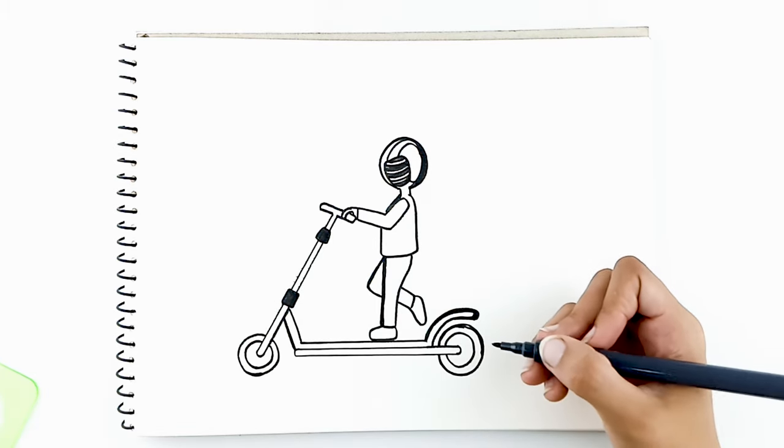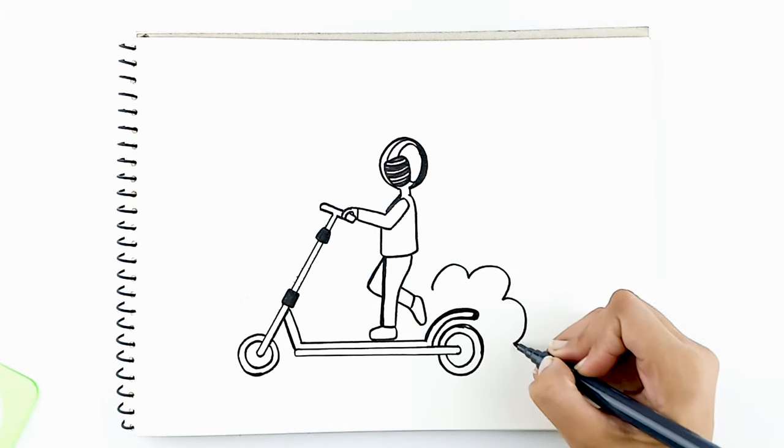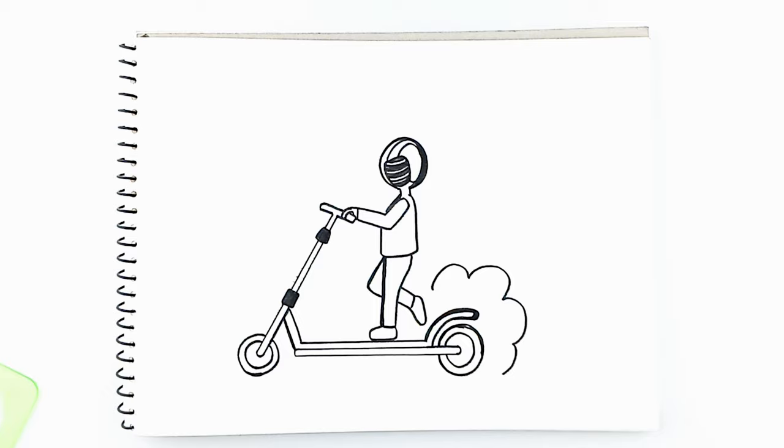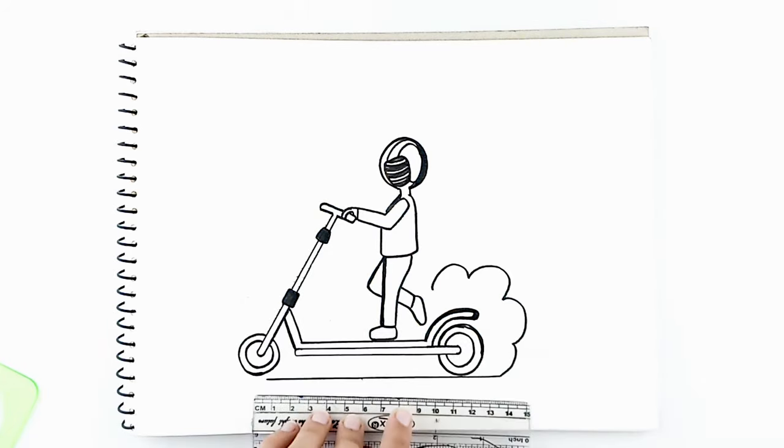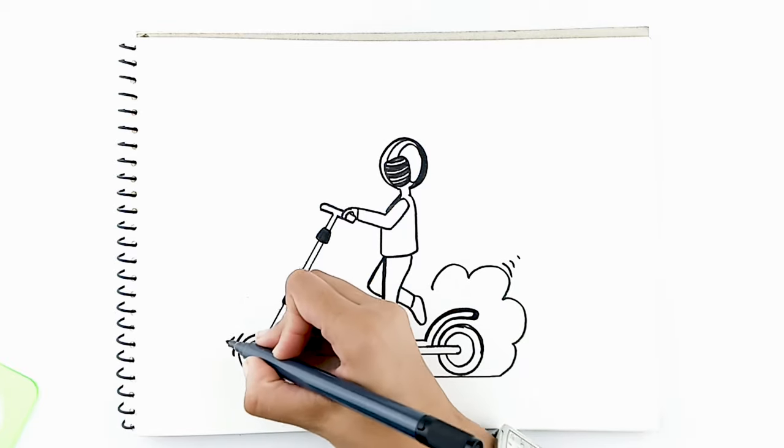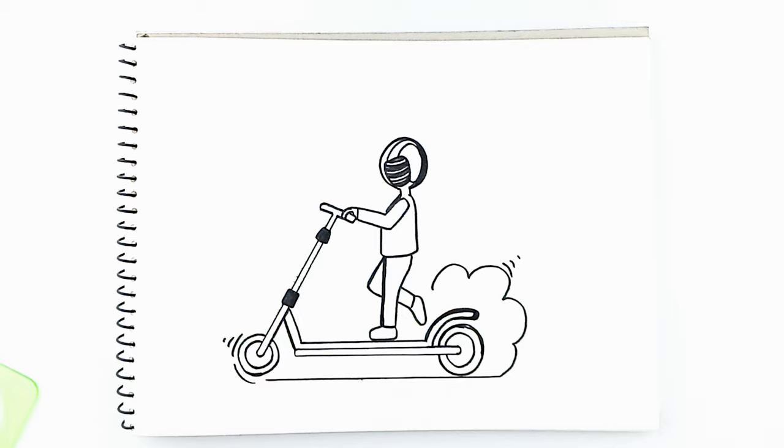Great! Let's now draw a cloud-looking line behind the back wheel. And continue the line going into a straight line under the scooter. Add a few lines on top of the cloud and a few in front of the front wheel, indicating movement. It's time to colour in.